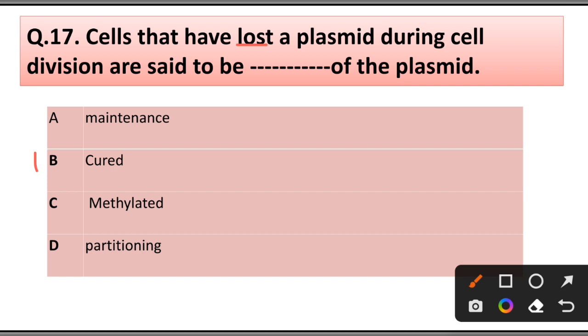Question number 17: Cells that have lost a plasmid during cell division are said to be of the plasmid: A) Maintenance, B) Cured, C) Methylated, D) Partitioning. Answer is option B, cured.